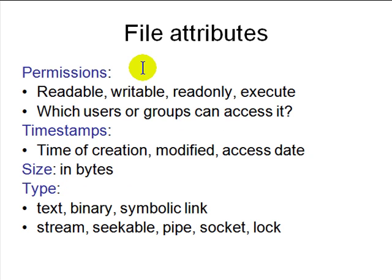Files have permissions — also called attributes. They can be readable, writable, read-only, or executable. There are users and groups on a computer; Windows permissions control who can read, write, or execute files and folders. Files also have timestamps: the time created, the last time modified, and the last time accessed, as well as the size in bytes.